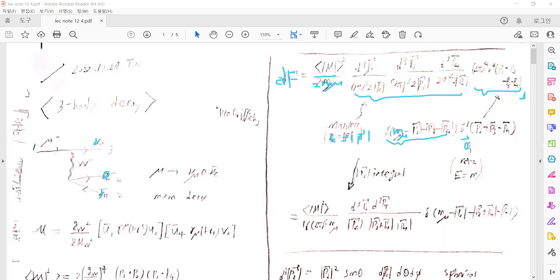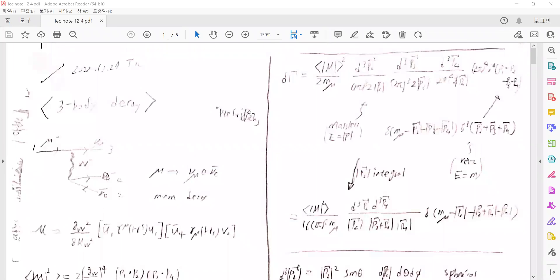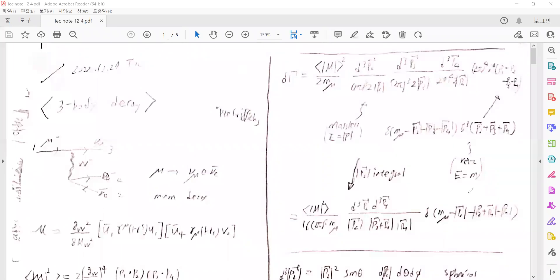There are three integrals: dP2, dP3, and dP4 in three dimensions. If we integrate over P3 using the delta function, then P3 equals minus P2 minus P4. So we can express it so that there are P2 and P4 instead of P3.